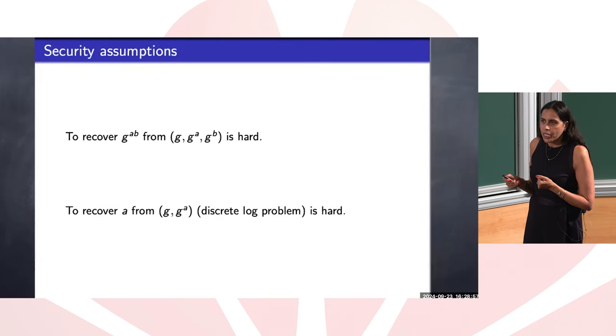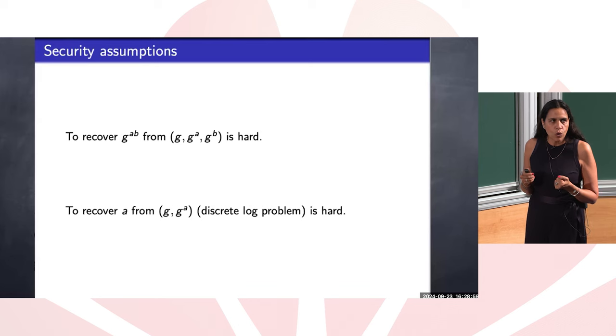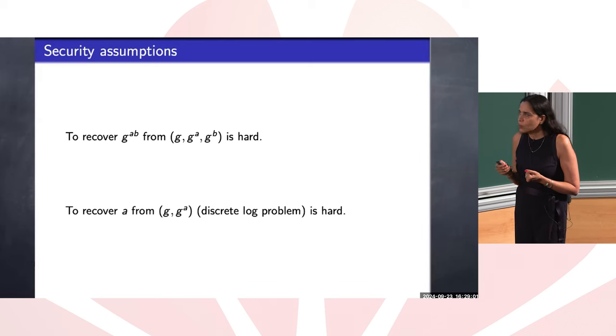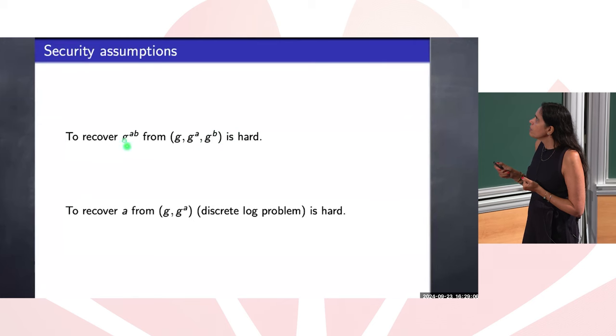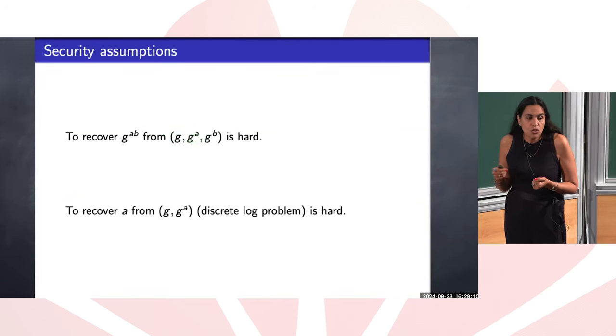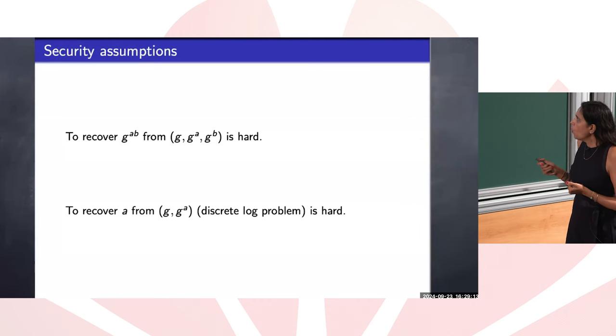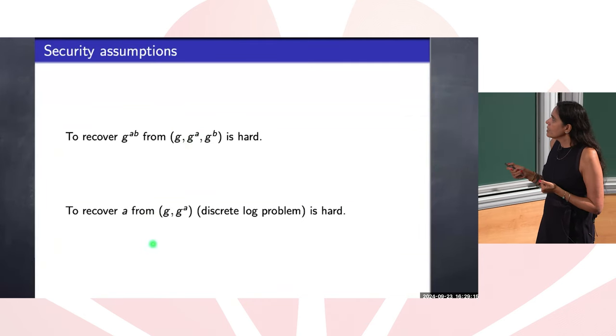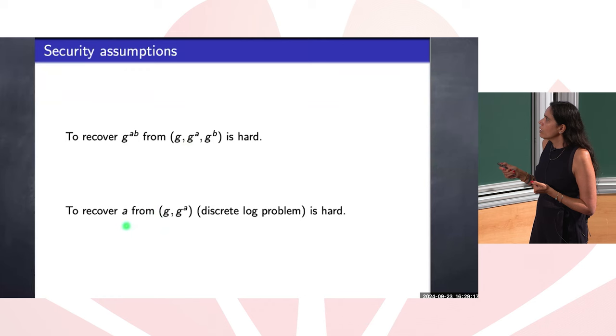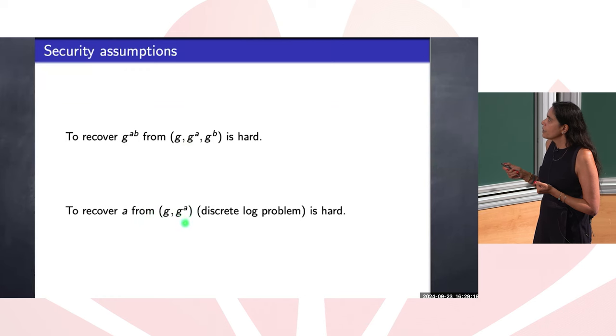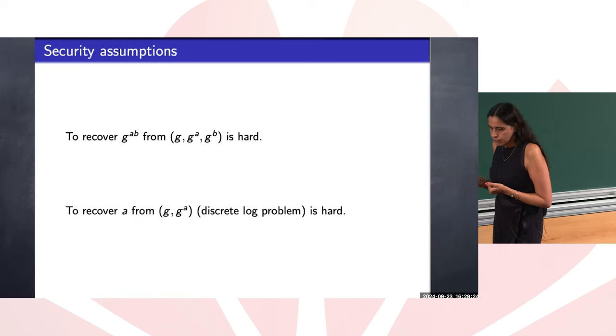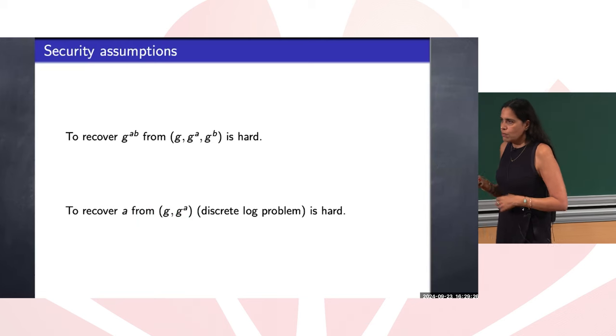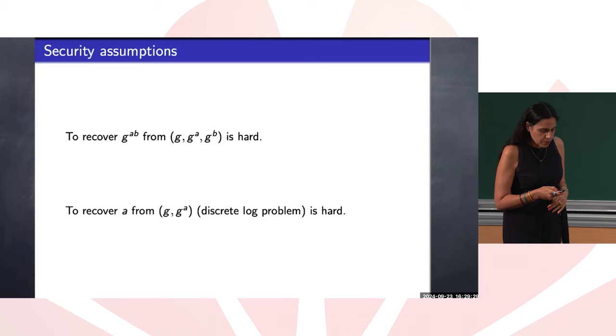The security assumption, roughly speaking, there are more sophisticated ways to talk about this, but the security assumption is as follows: to recover g^ab from g, g^a, g^b. So this is assumed to be hard. Or you can talk about discrete log problem to recover a from g and g^a. So we say this is hard. So this is a security assumption for this Diffie-Hellman key exchange problem.